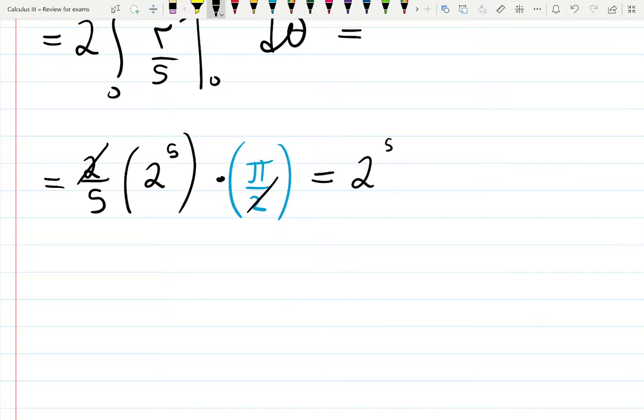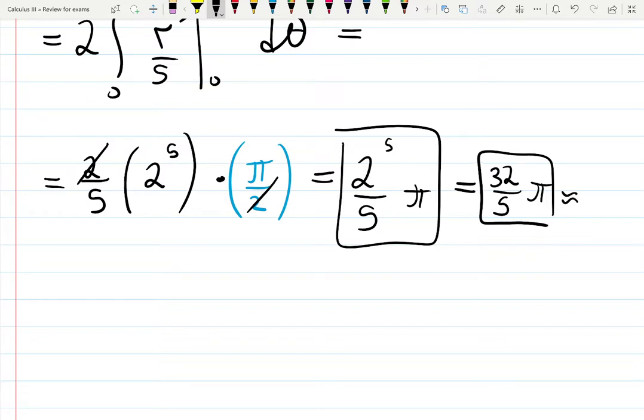2 to the 5 over 5 pi. Perfect. It actually matches the solution I need. 32 over 5 pi, which is approximately 20.106.